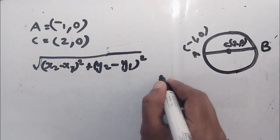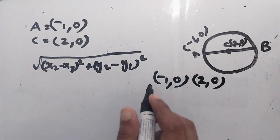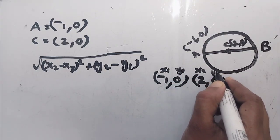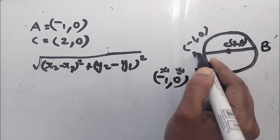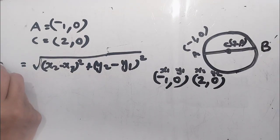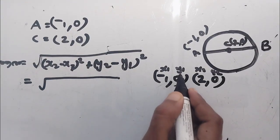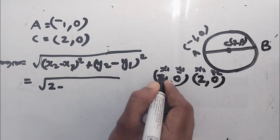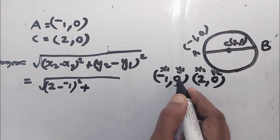Now we have two equations. Minus 1 is 0. We have x1, x2, y1, y2. Now applying: x2 minus x1 all square — x2 is 2 minus, we have already minus 1, all square — plus 0 minus 0.